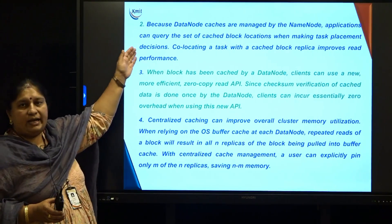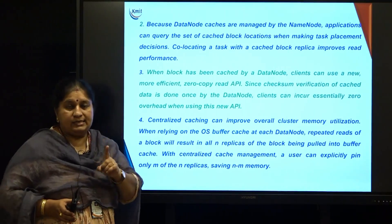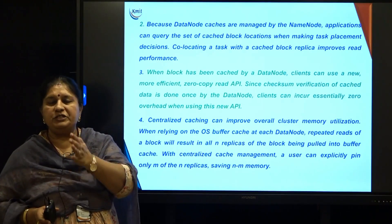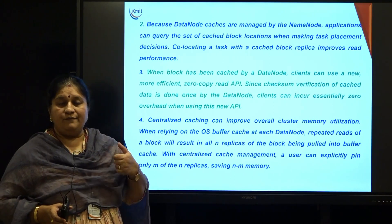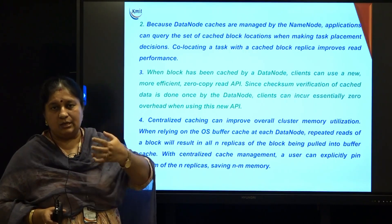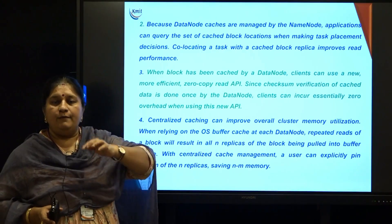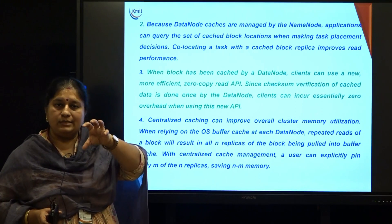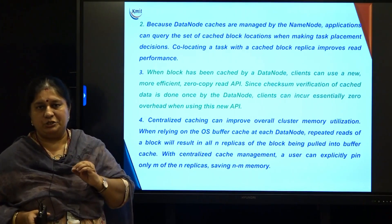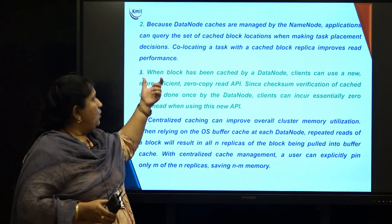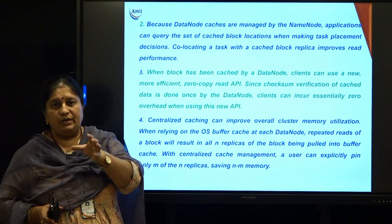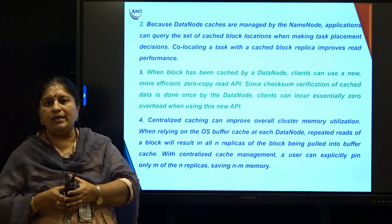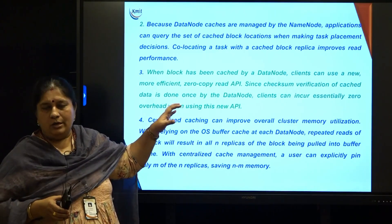The second advantage: because data node caches are managed by the name node, which contains the metadata — which block is on which data node, which block is cached in which data node — the name node has all the information. Whenever the application master has to prepare its execution plan, it can consult the name node to determine which block is to be accessed, where the block is cached, and where the task is to be scheduled. One such technique is co-locating a task wherever the cache memory is holding a data block. If my task is scheduled there, I need not load the data again into memory, so they follow the principle of locality.